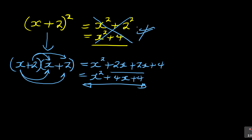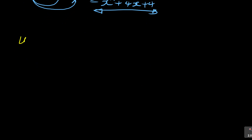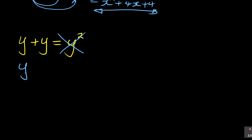Students in grade 9 master this, but by grade 11 or 12 they revert to the wrong version — I don't know how they missed it. Another error: when someone writes y + y, students say y². That's wrong. The answer y² is for y × y. When you multiply, you apply the laws of exponents and add the powers: y¹ × y¹ = y².